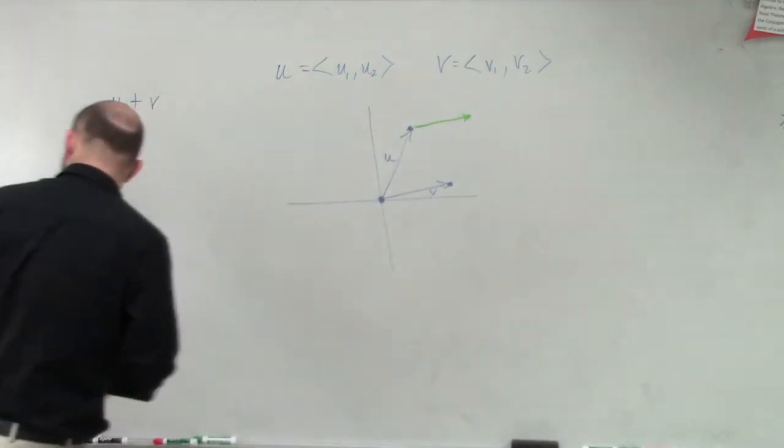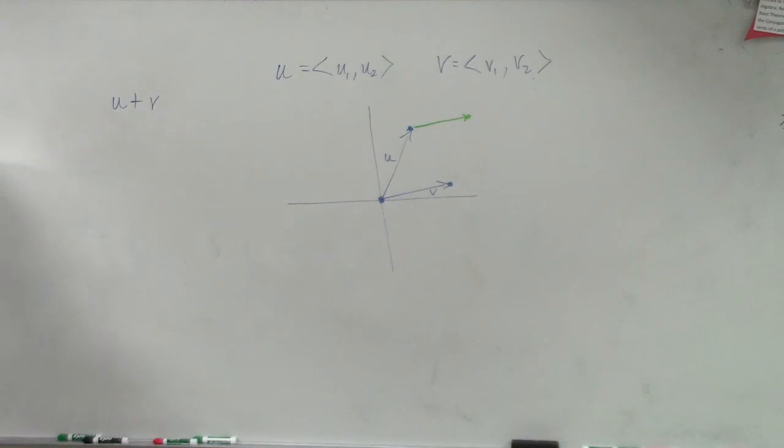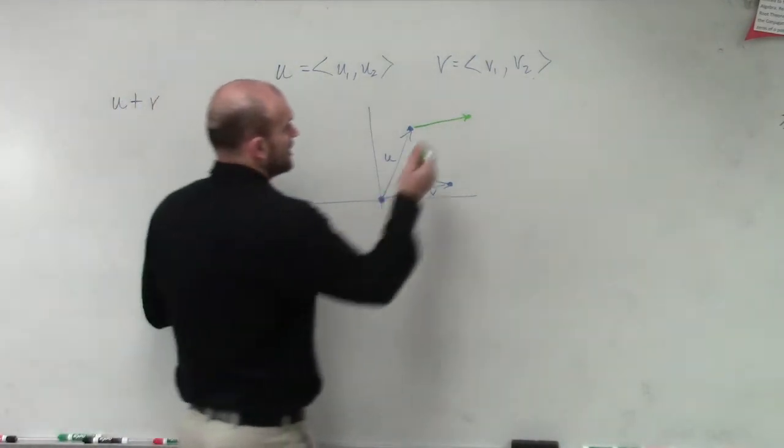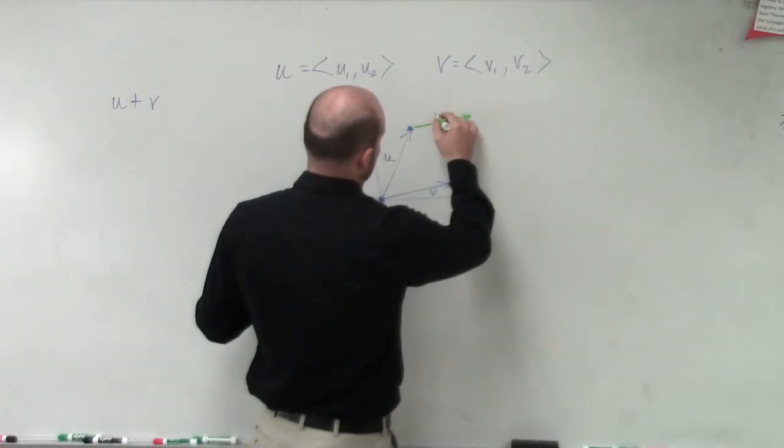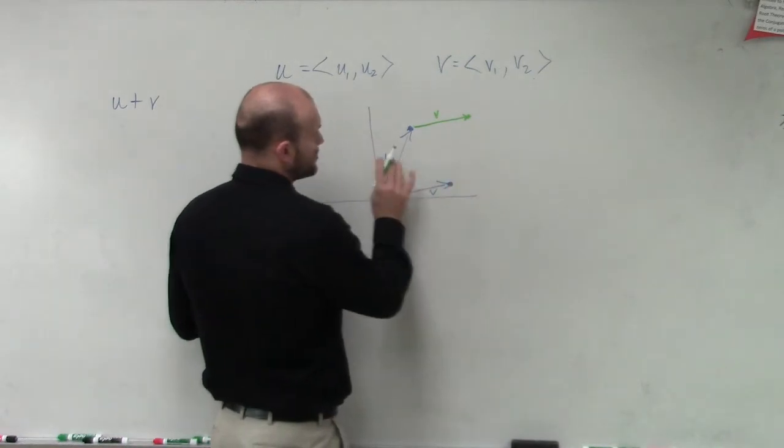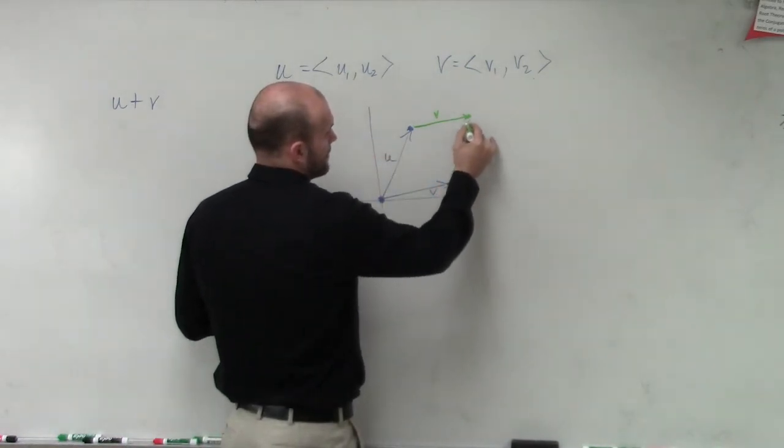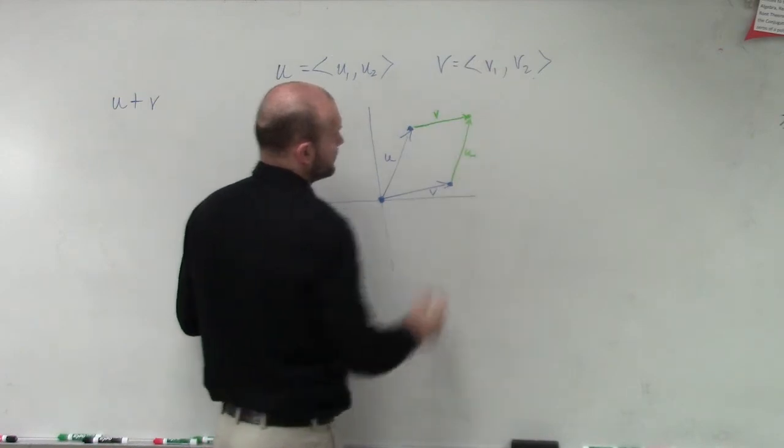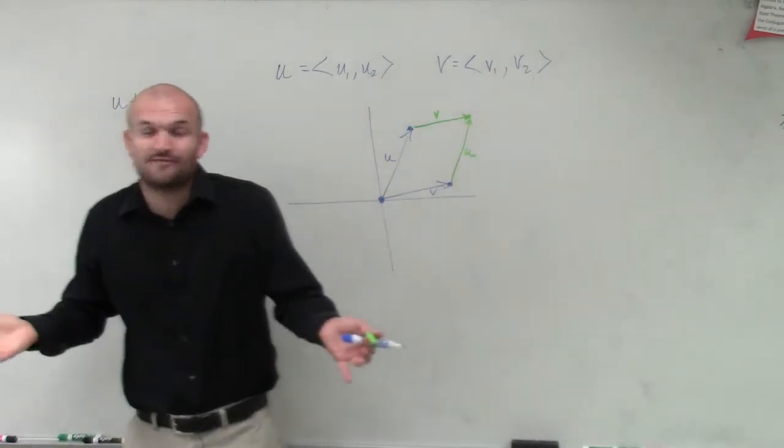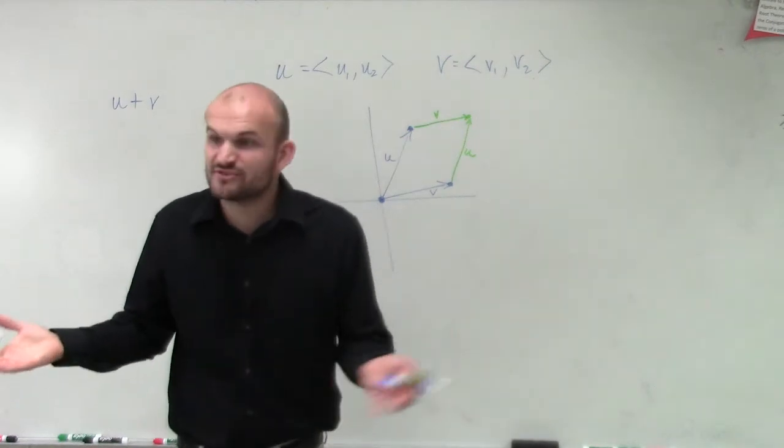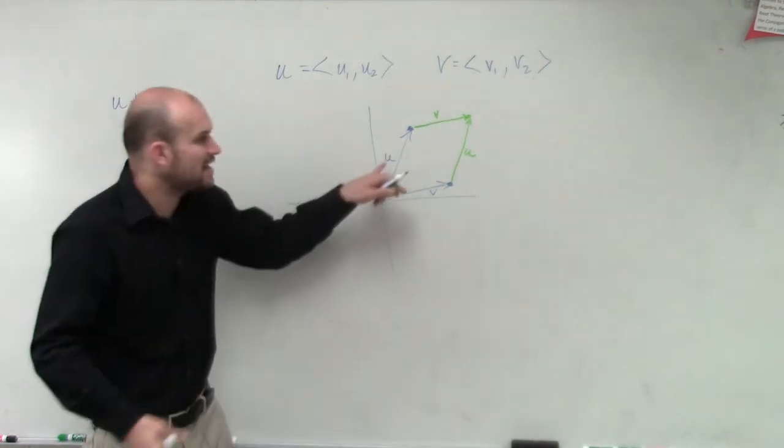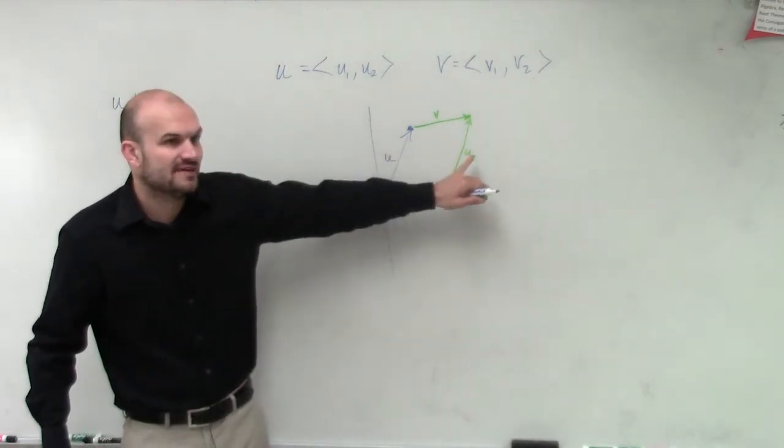Or we could do it the other way. So we could put a new v here, or you could transpose u to the end of v. So when you're adding two vectors, it doesn't matter. If I do 3 plus 4 is the same as 4 plus 3, right?